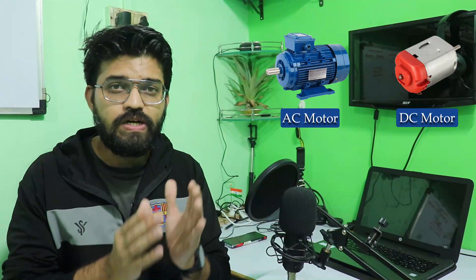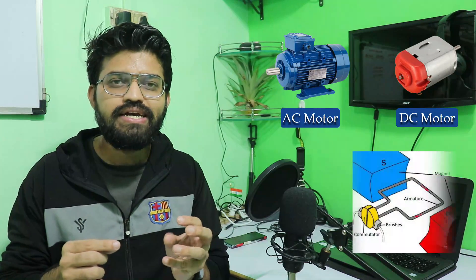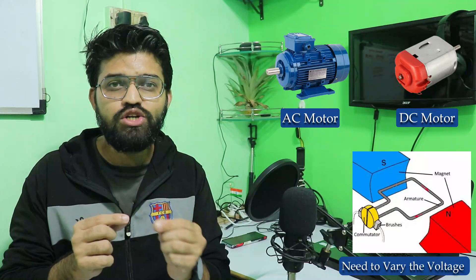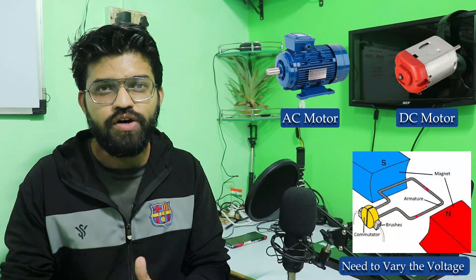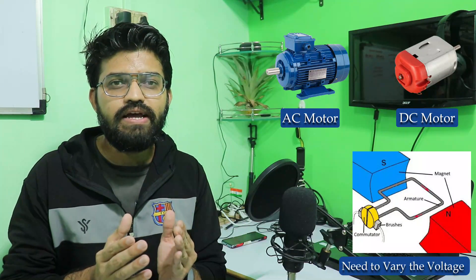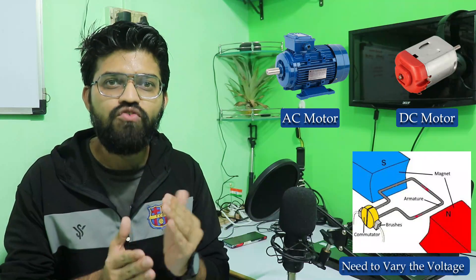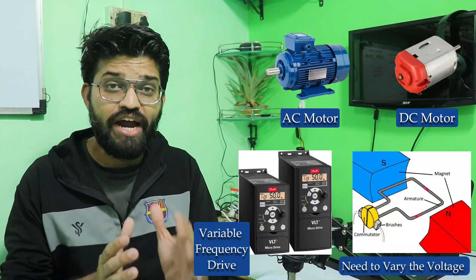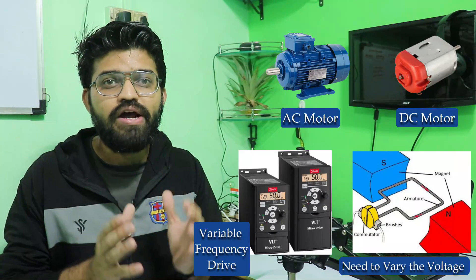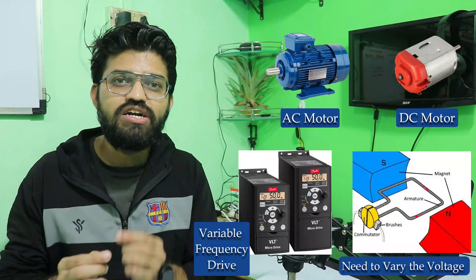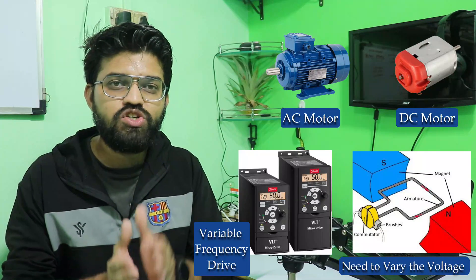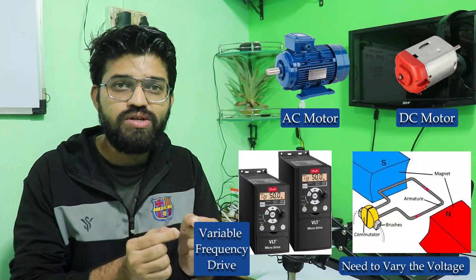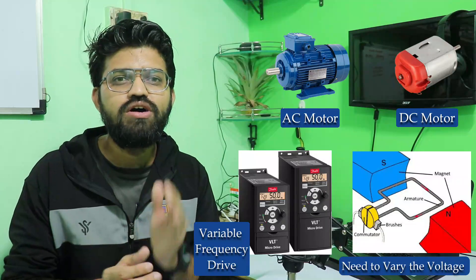For speed control, to vary the speed of a DC motor we need to vary the current flowing through the armature coil. In the case of the AC motor, to regulate the speed we use a VFD — variable frequency drive — by altering the frequency of the alternating current passing through the stator windings. By using a variable frequency drive we can vary the speed of the AC motor.